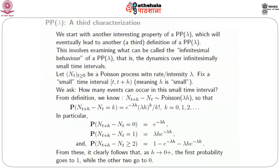But the important thing is that these probabilities are going to be very, very small for k greater than or equal to 2. In particular, the probability of no events is e^{-lambda*h}, the probability of exactly one arrival is lambda*h * e^{-lambda*h}, and the probability that N(t+h) - N(t) is greater than or equal to 2 is 1 minus the first two probabilities — the complement of there being 0 or 1 arrivals.